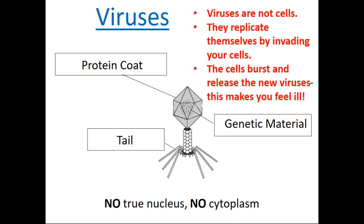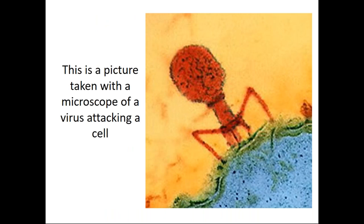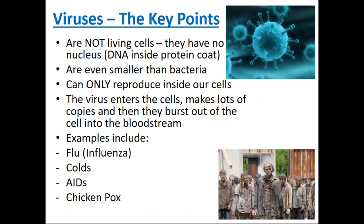When a virus infects a cell, it takes over the cell's genetic material and makes the cell produce more viruses. The new virus breaks open the cell membrane and escapes to infect other cells — this cell damage is part of what makes us feel ill. Viruses have just DNA inside a protein coat. They are even smaller than bacteria and can only reproduce inside our cells. The virus enters the cell, makes lots of copies, and then bursts out into the bloodstream. Examples include influenza, HIV/AIDS, and chickenpox.